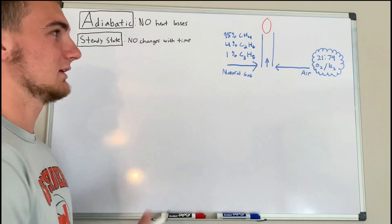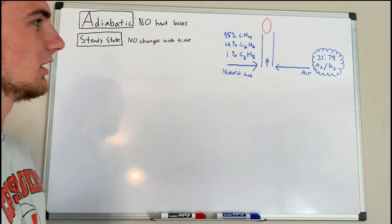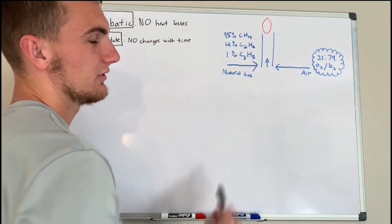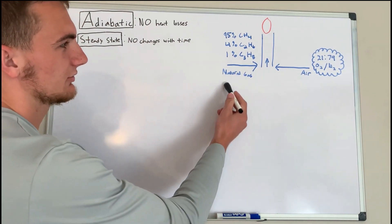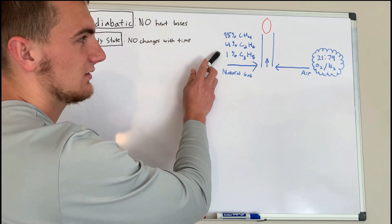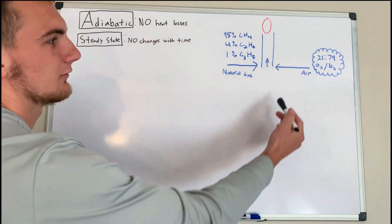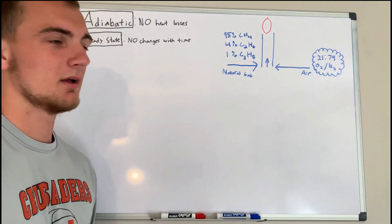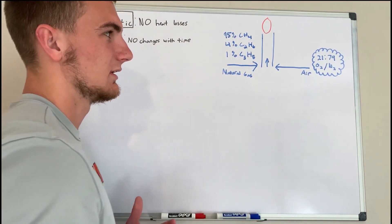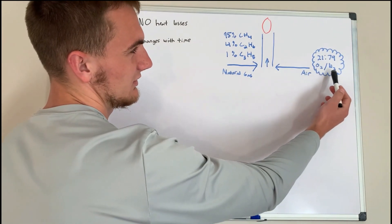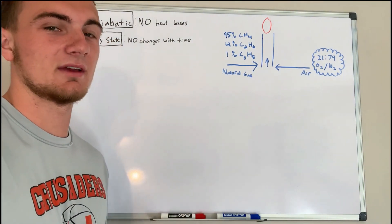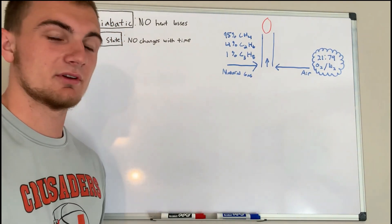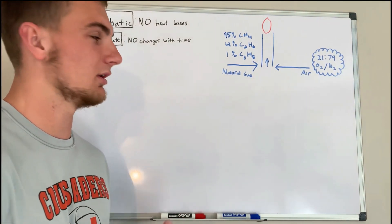I've gone ahead and drawn out a visual here for this example problem. To the right we have a picture of what's going on — we have our natural gas and our air combining to produce this adiabatic flame. Our natural gas is composed of 95% methane, 4% ethane, and 1% propane. Our air over here is composed of 21% oxygen and 79% nitrogen. In a real-life scenario it's 21% oxygen, 78% nitrogen, and 1% argon, but for simplicity we'll assume 21% oxygen and 79% nitrogen.